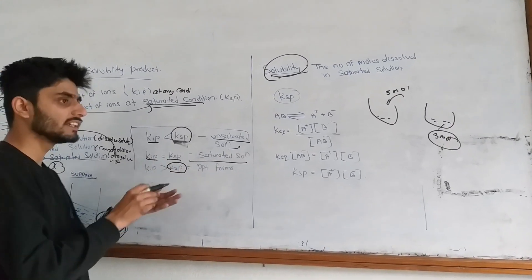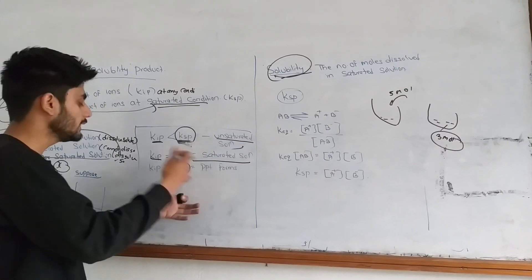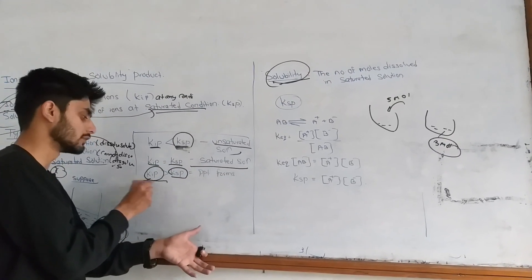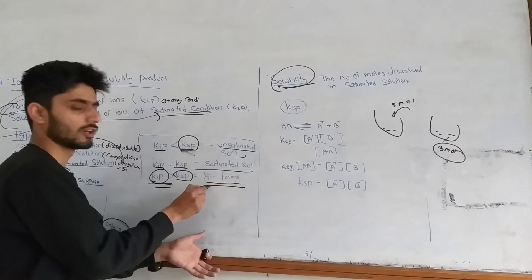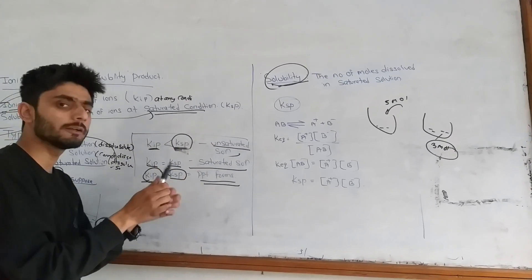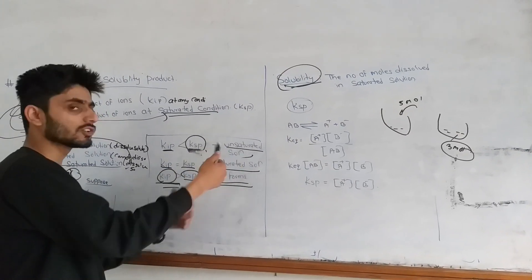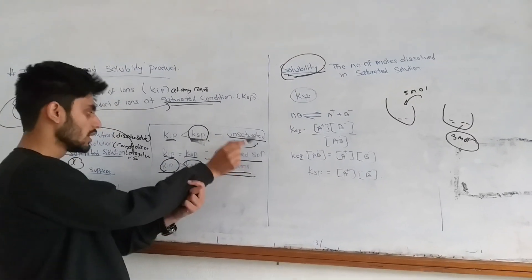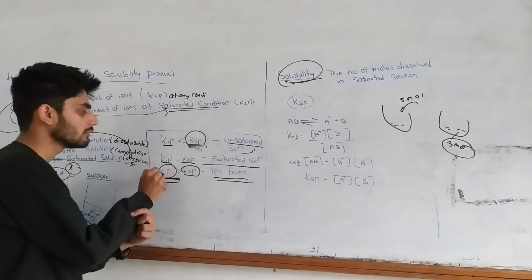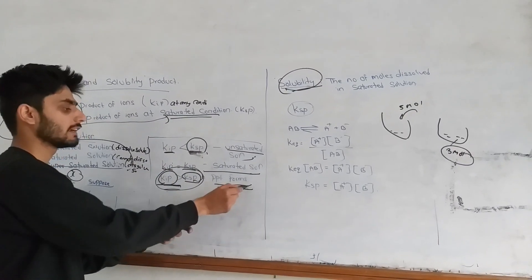KSP is the solubility product constant in the environment — that is the ionic solubility product. The excess ionic product reduces in the solution. Remember: when KIP (ionic product of ions) is less than KSP, then the solution is unsaturated. When KIP is greater than KSP, the ionic product is greater than solubility product, so precipitation occurs.